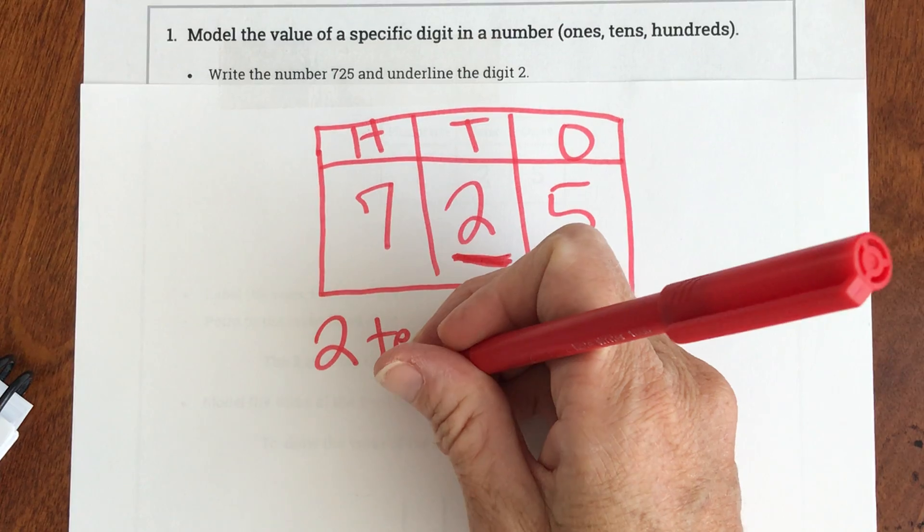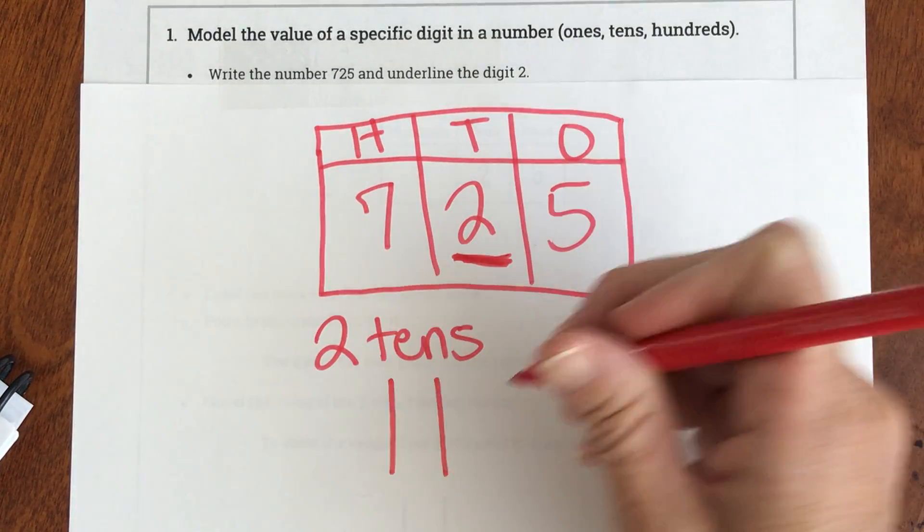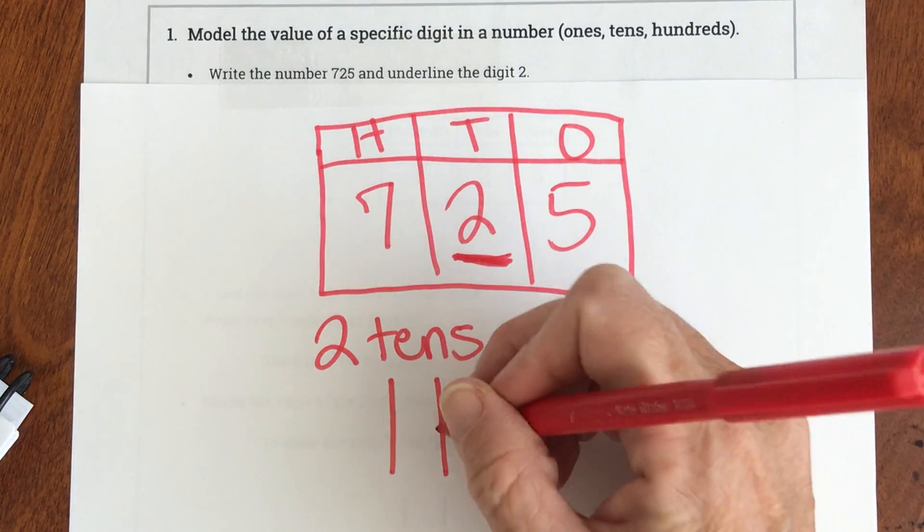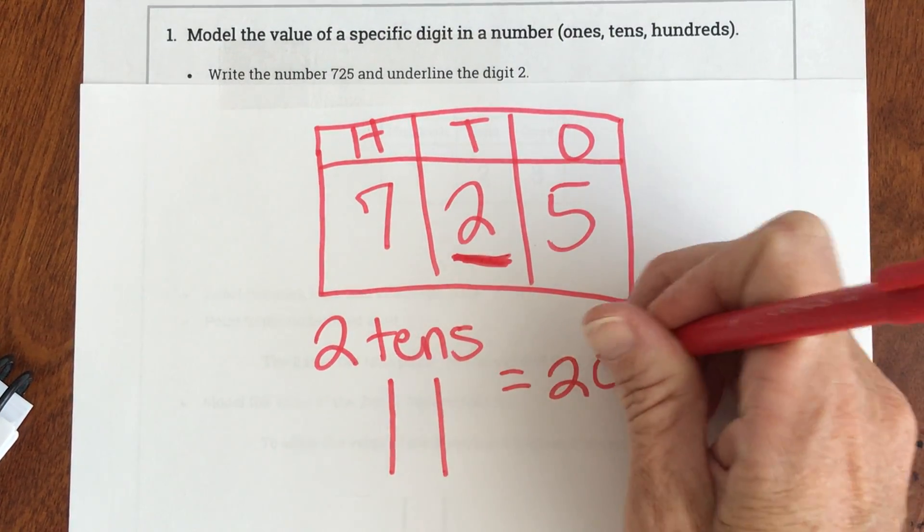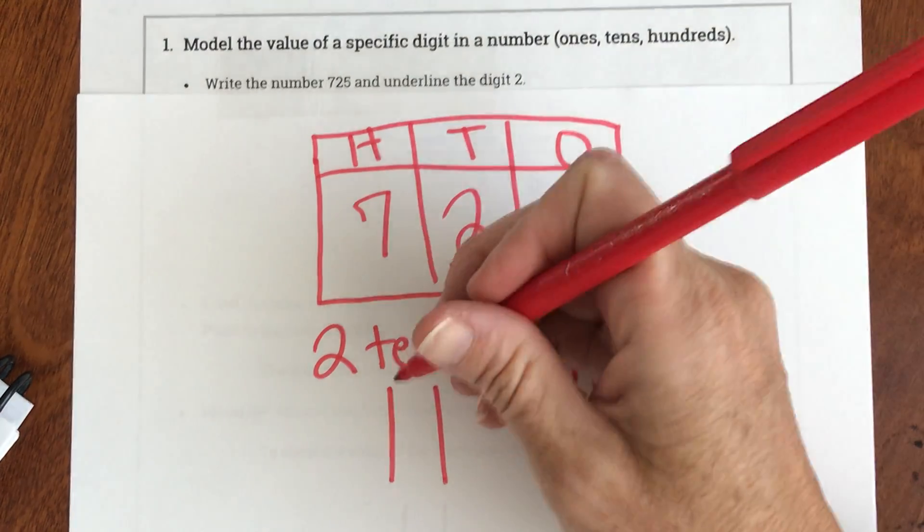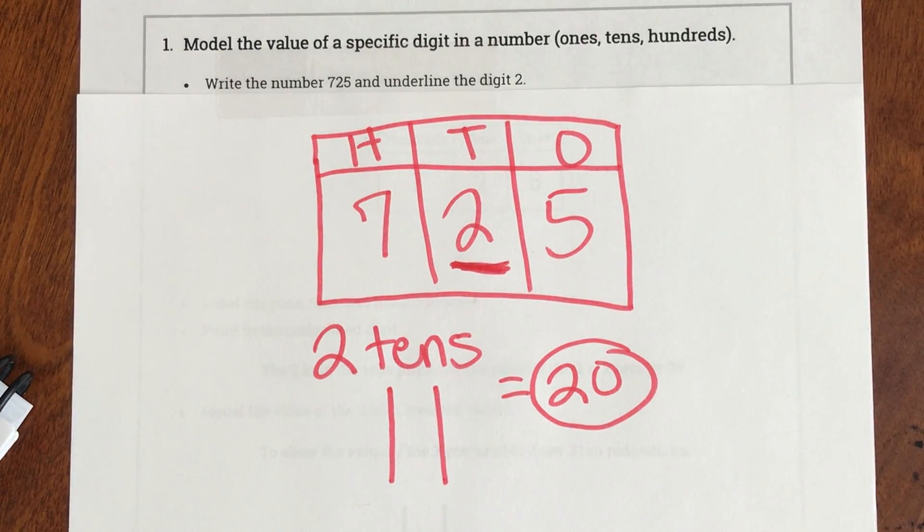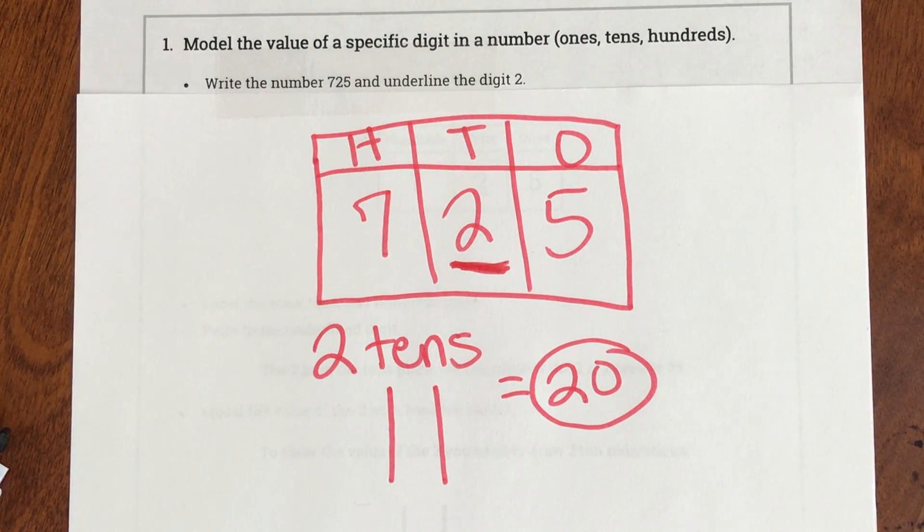Which looks like this because it also wants me to draw it. 2 tens. So 2 tens is worth 20. So my answer is 20. This isn't an 11. This is my 2 10-rods. Okay let's look at another one before we do some together.